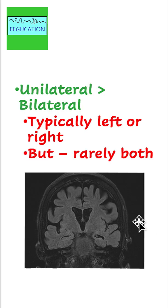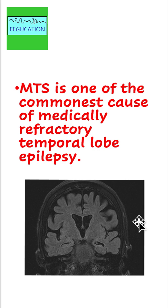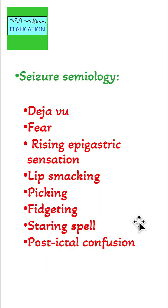Unilateral hippocampal sclerosis is far more common than bilateral sclerosis. Mesial temporal sclerosis is one of the commonest causes of medically refractory temporal lobe epilepsy.